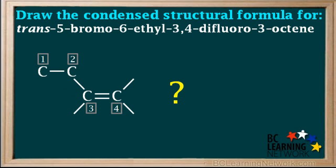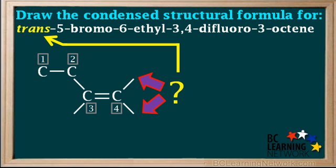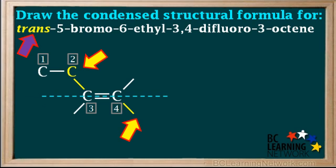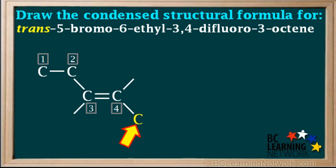We continue adding carbon atoms to the right side of the structure. We can answer which position to use by looking at the prefix 'trans.' To draw the trans isomer, we draw a dashed line through the double bond. The trans means the rest of the chain is attached to the lower bond on the right, so the carbon atoms connected to carbons three and four are across the line from each other. Trans means across. So the next carbon atom goes here — carbon number five.